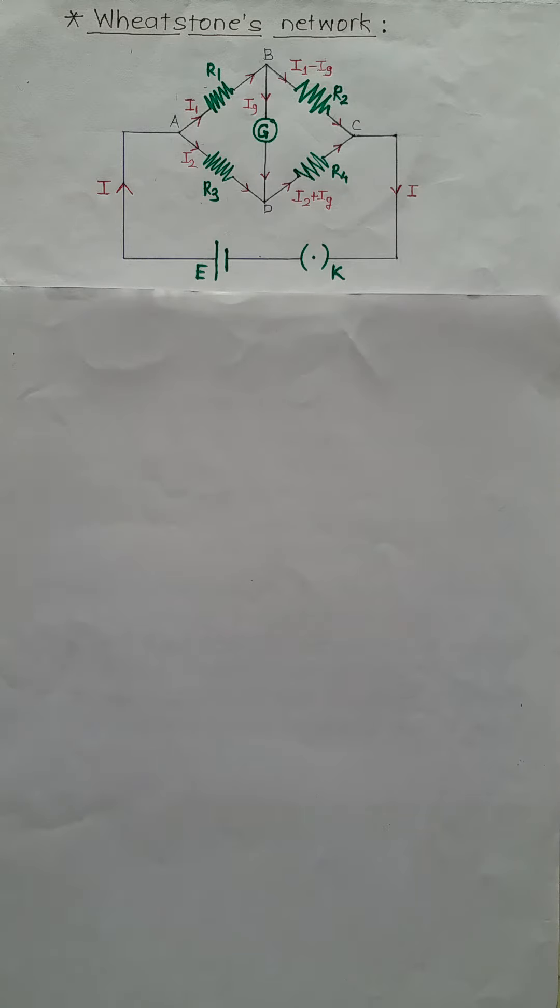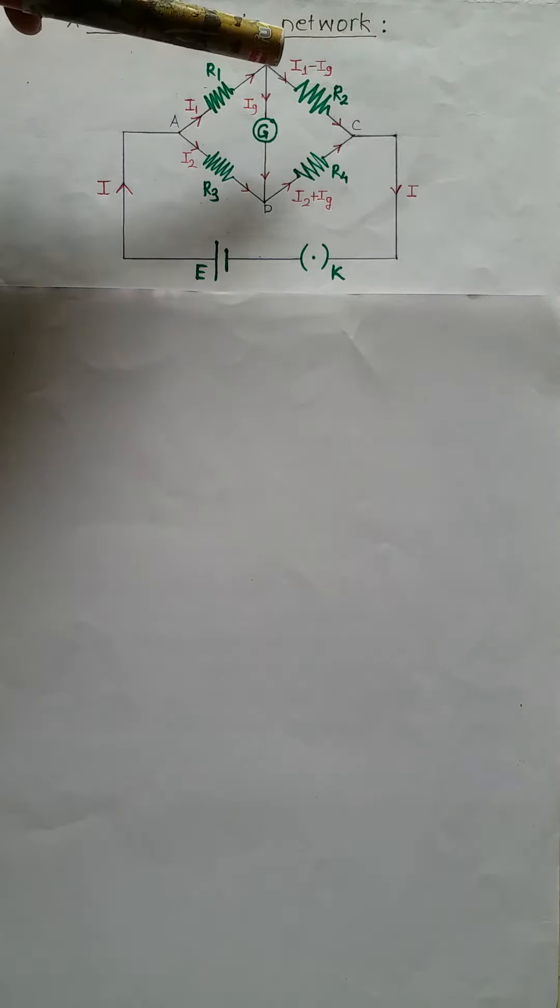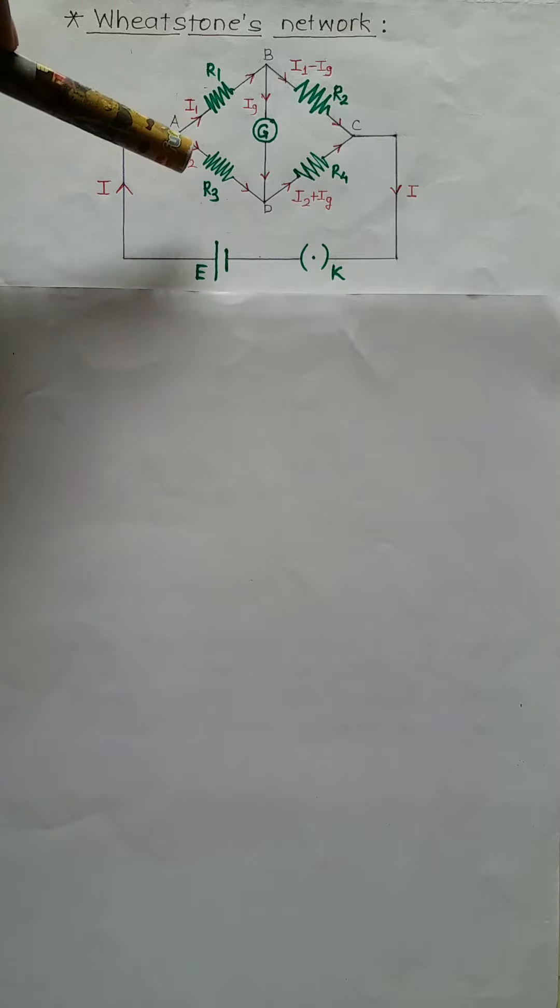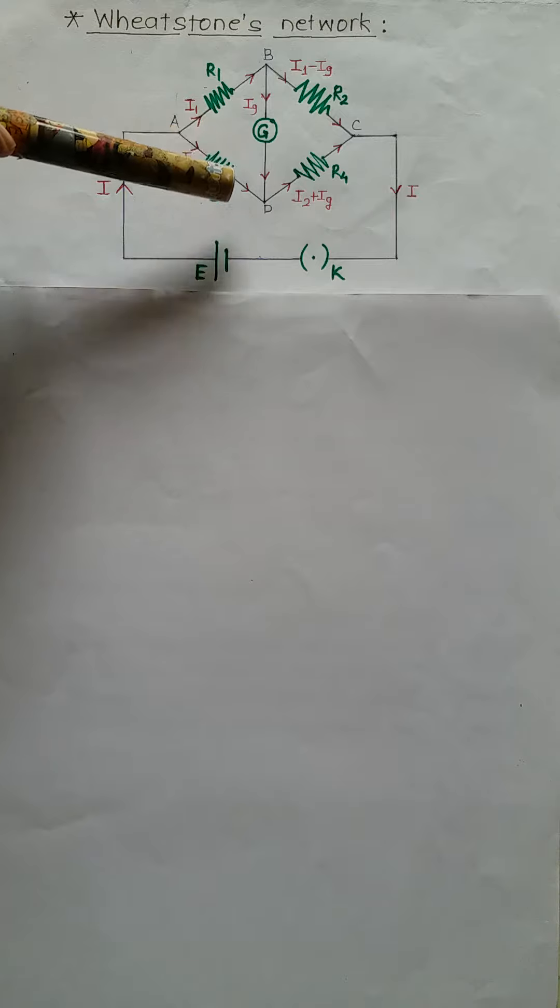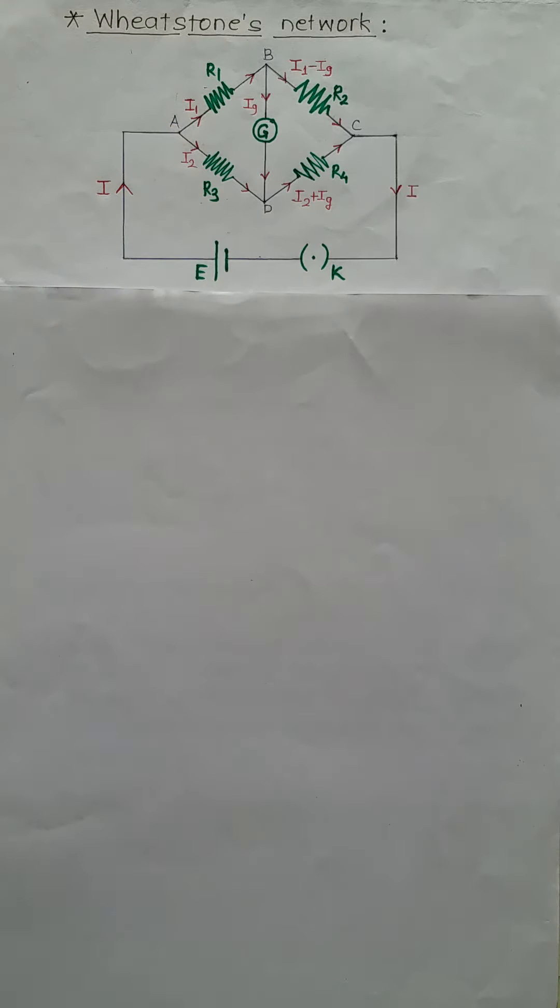Students, we have seen construction and working of Wheatstone's network and balancing condition in previous lecture. What is balancing condition of Wheatstone's network? Ratio of R1 to R2 is equal to ratio of resistance R3 to R4 when no current is passing through this galvanometer. This balance condition of Wheatstone's bridge is used for strain measurement using strain gauge.